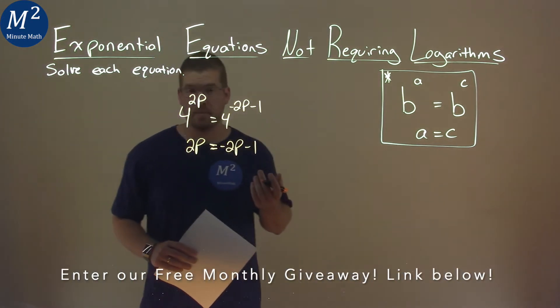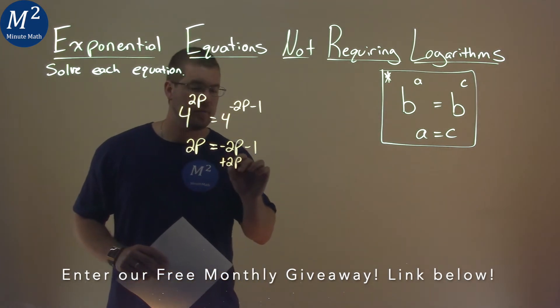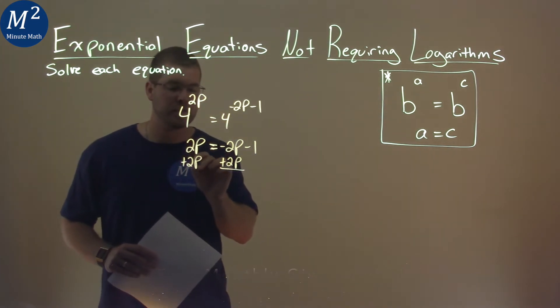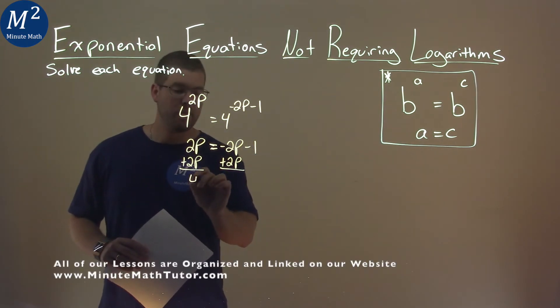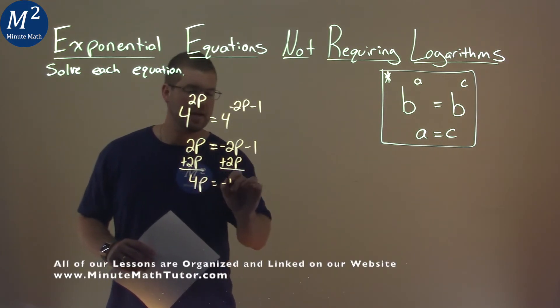And now we just solve for p. I add 2p to both sides to combine our like terms. 2p plus 2p is 4p, and that's equal to that negative 1 left over.